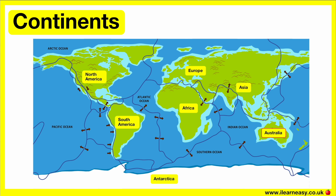All the continents have different kinds of weather, landscapes, environments, and populations. For example, Antarctica is very cold and icy and has little plant and animal life, whereas Africa is very warm and has a variety of plants and animals. Most of the continents are also divided into political units called countries.